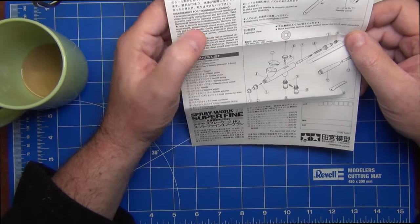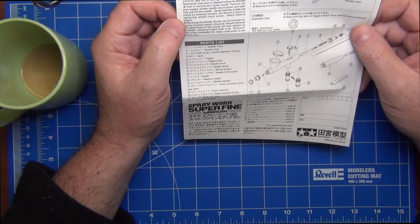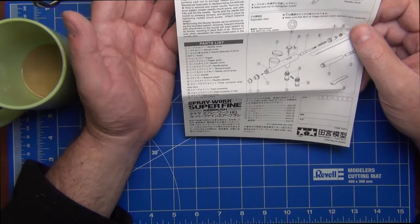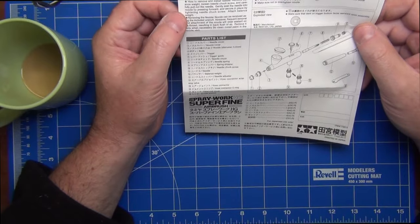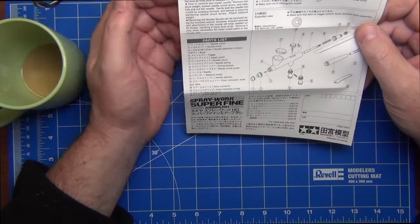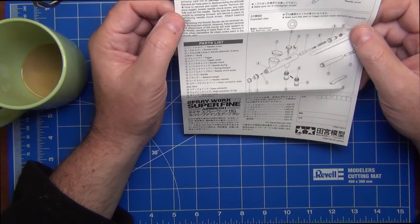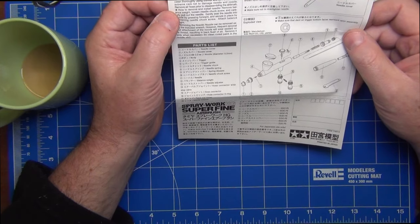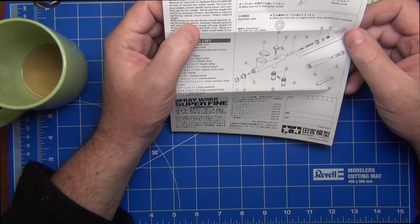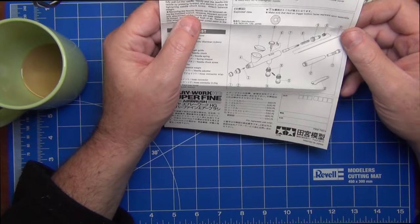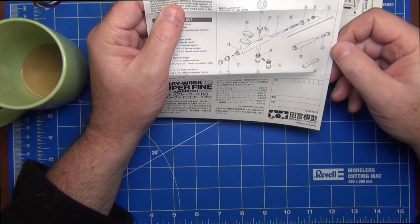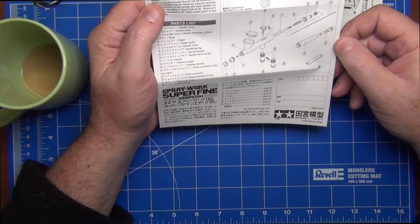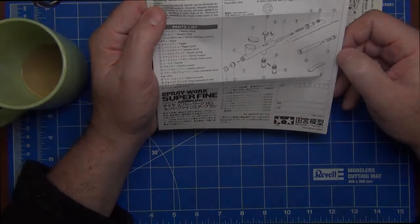That you should only really completely dismantle it as and when required, which has kind of been my philosophy. But I know a lot of modelers like to pull things apart and clean their airbrush thoroughly after every time they use it. So interesting that Tamiya are actually saying that's perhaps not the best way to go - you should just clean the needle from time to time, back flush the airbrush obviously after you use it, and really only look at completely dismantling it if required. In the last illustration we have an exploded view of the airbrush itself and callouts as to what the names are of all the various parts which is quite nice.